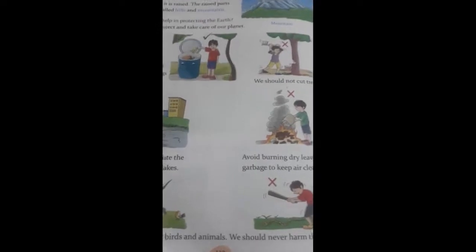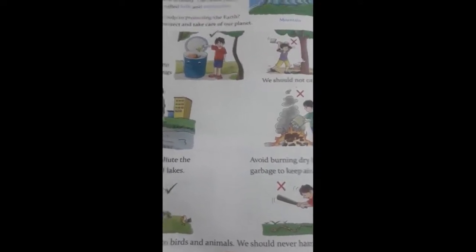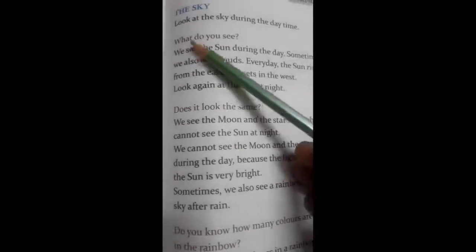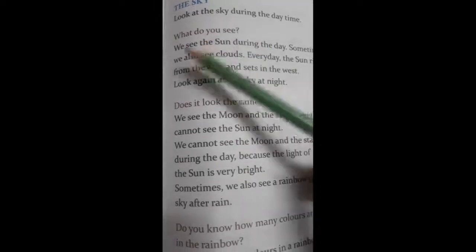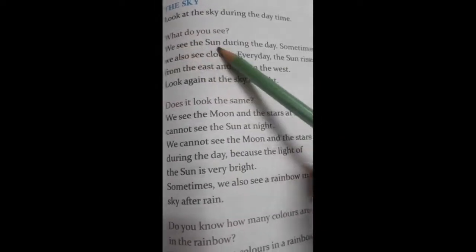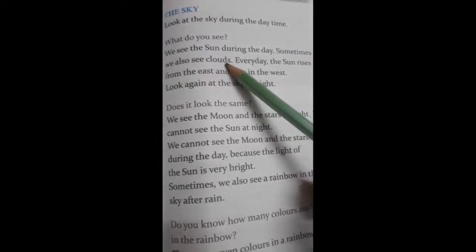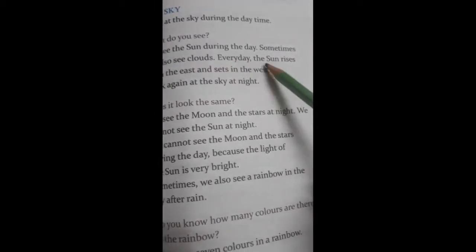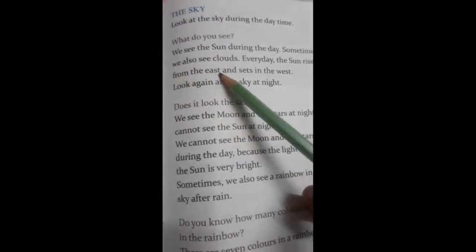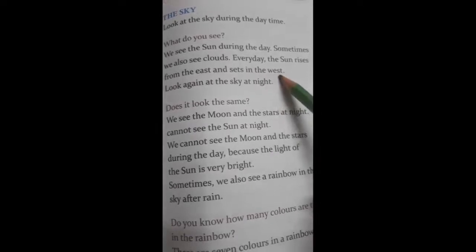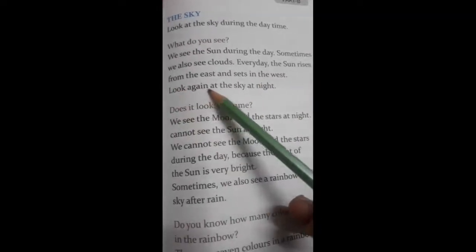Now next page. What do you see in the sky? Let's see, what do you see? We see the sun during the day. Sometimes we also see clouds. Every day the sun rises from the east and sets in the west.